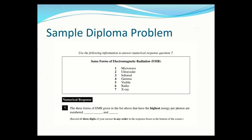Now let's do these sample diploma questions. The three forms of EMR with the highest energy per photon - the highest energy is gamma, then x-ray, then ultraviolet, in any order.